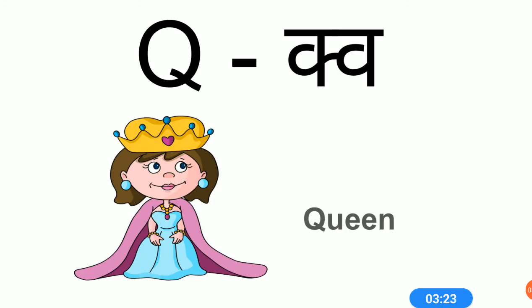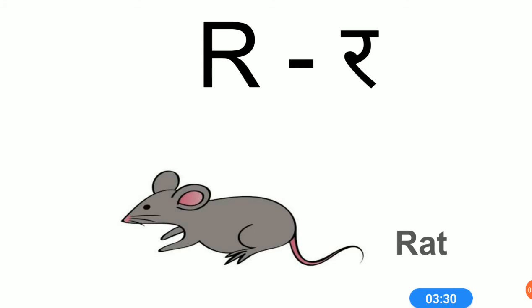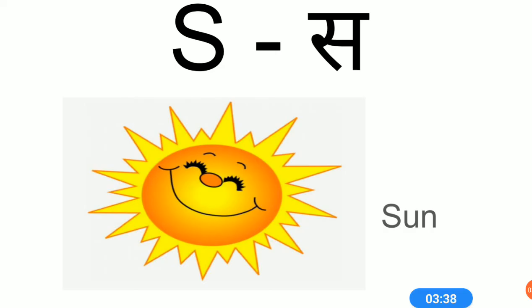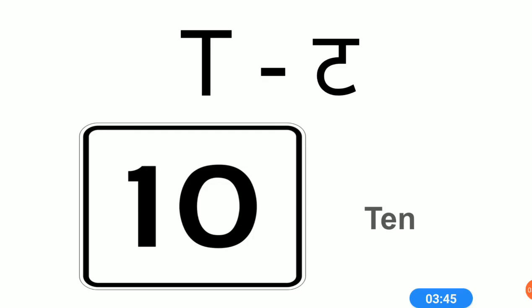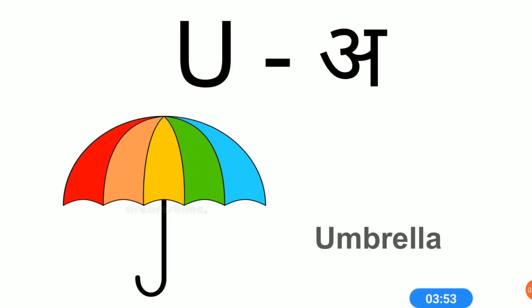Q sound is Qu. Q for queen. R sound is R. R for rat. S sound is S. S for sun. T sound is T. T for ten. U sound is U. U for umbrella.